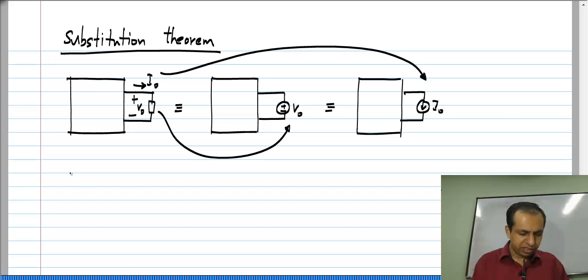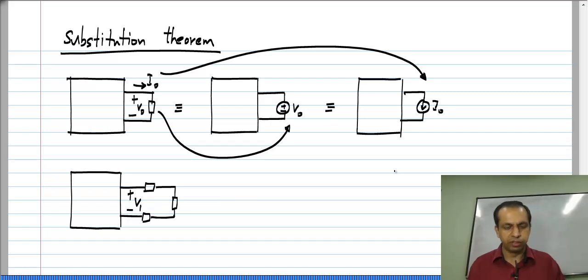Now, the very minor extension I mentioned is that you do not have to have just one element for it to be substituted, you can have multiple elements. So, for instance, let us say we had a series combination of three elements and across the series combination I had a voltage V_1, just to distinguish from the other case I will call it V_1, and through the series combination I had a current I_1.